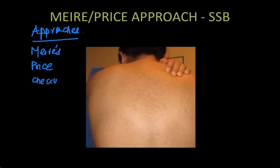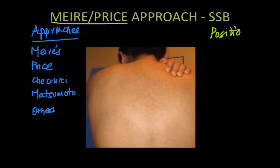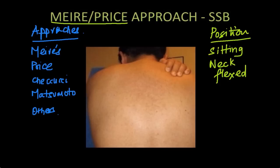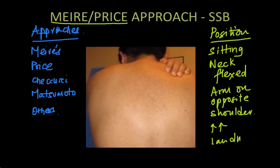There are many approaches described to the suprascapular block: Myers, Price, Shiguchi's, Matsumoto's, and many others, but we'll be focusing upon these approaches mentioned here. In the Myers or Price approach, the patient is positioned sitting with the neck flexed and the arm resting on the opposite shoulder. This helps in making the side of the scapula in which we are interested a bit more prominent.